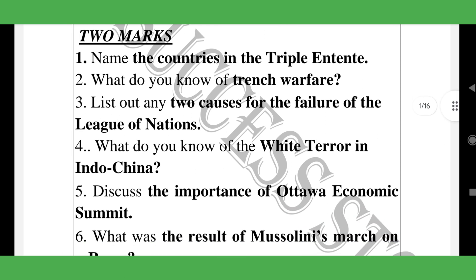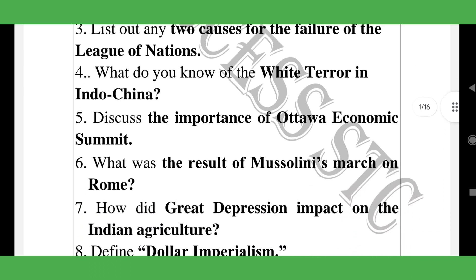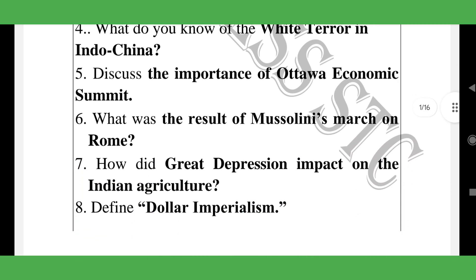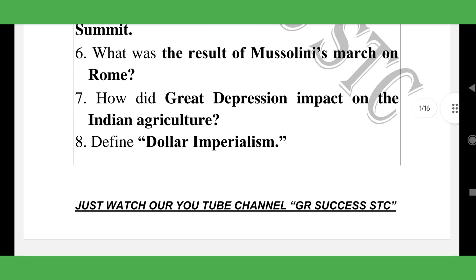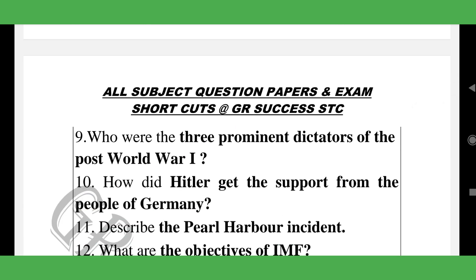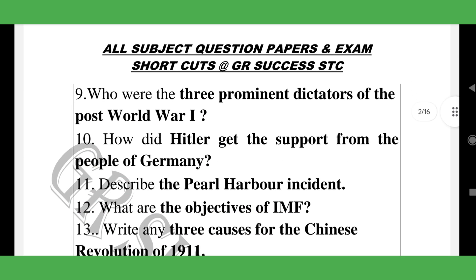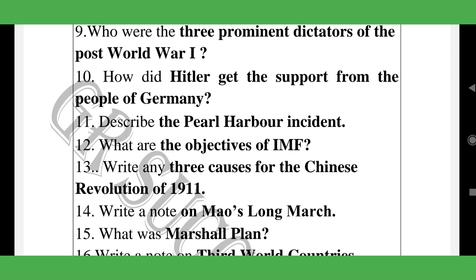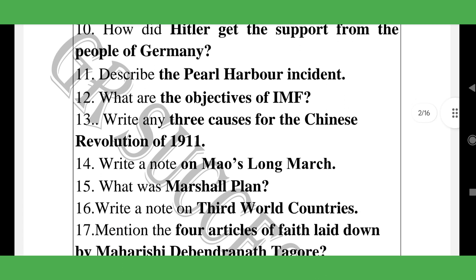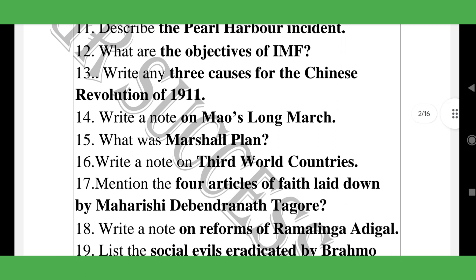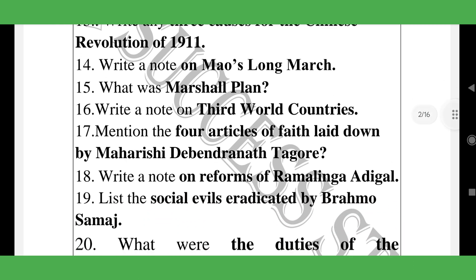History topics include: trench warfare, failure of the League of Nations, White Terror in Indo-China, economic summit, result of Mussolini's march on Rome, Great Depression impact on Indian agriculture, dollar imperialism, prominent dictators of the post-World War One period, Hitler getting support from the people of Germany, Pearl Harbor, objectives of the IMF, three causes of the Chinese Revolt of 1911, the Long March, Marshall Plan, and Third World countries.